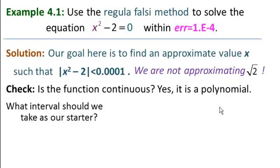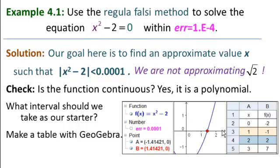So what interval should we take as our starter? We've done this several times, but we'll actually do it in GeoGebra again. We make a table with GeoGebra and find out different function signs. So our root is bracketed by the interval 1, 2. So our A is 1 and our B is 2. Let's go to GeoGebra and solve this problem.